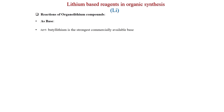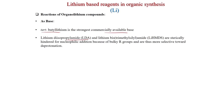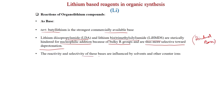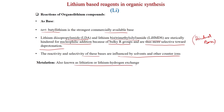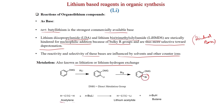As a base: tert-butyl lithium is the strongest commercially available base. LDA (lithium diisopropylamide) and LiHMDS (lithium bis(trimethylsilyl)amide) are sterically hindered for nucleophilic addition due to bulky groups and are thus more selective towards deprotonation—they act as hindered bases rather than nucleophiles. Their reactivity and selectivity are influenced by solvents and counter-ions. The metallation reaction (lithium-hydrogen exchange) with a DMG: R-Li gives the lithium species, and after treatment with a bromide reagent, the brominated compound is obtained. Terminal alkynes (sp-hybridized C-H) can be deprotonated with n-BuLi to give lithium acetylide; butane is the side product.